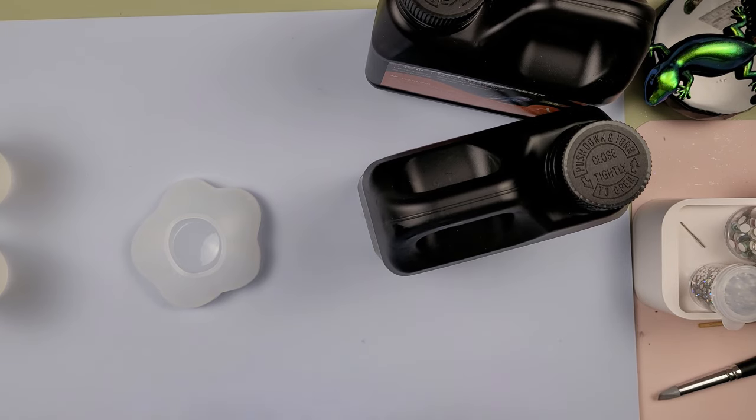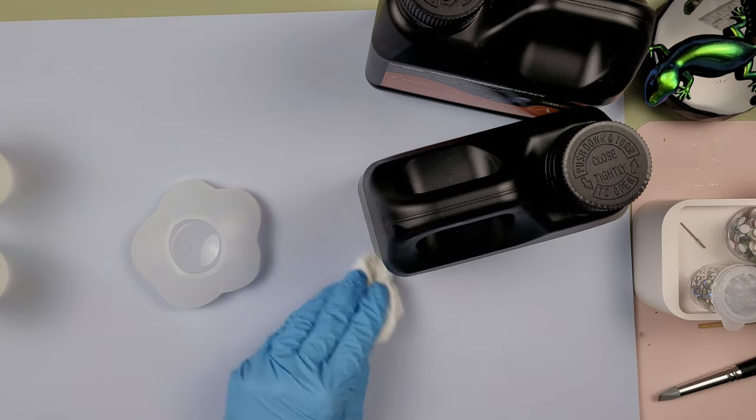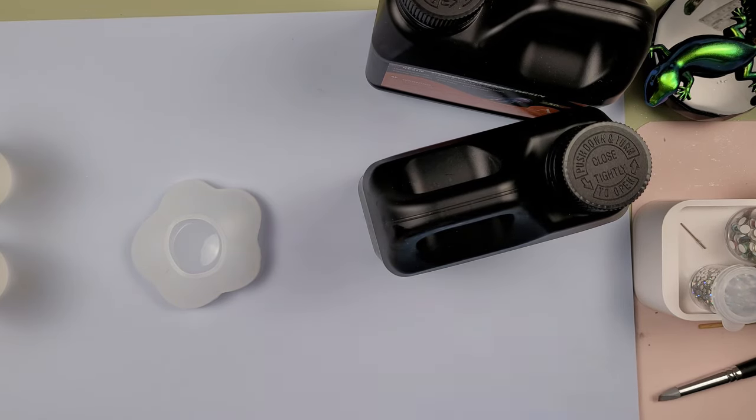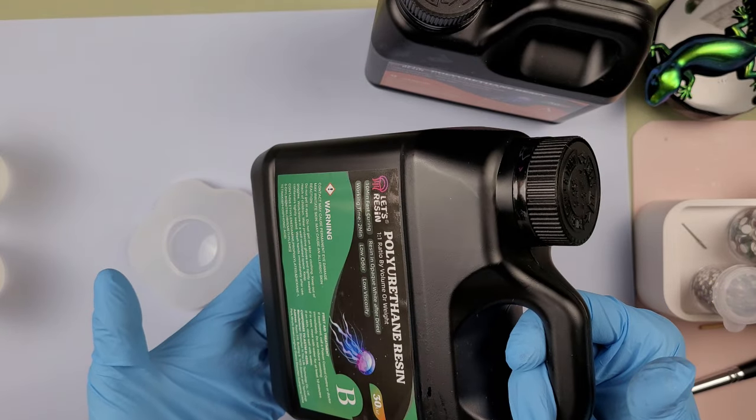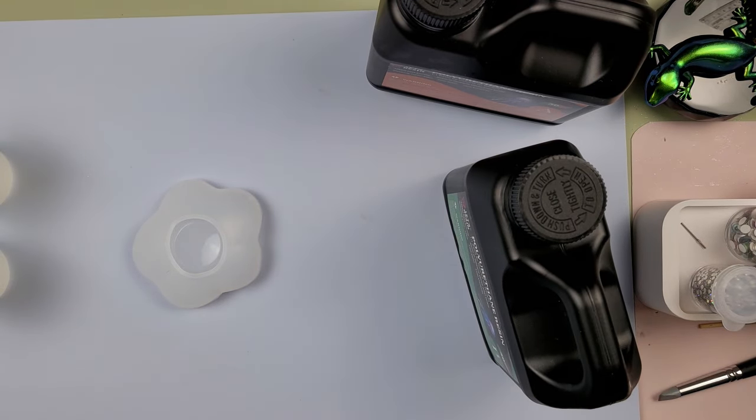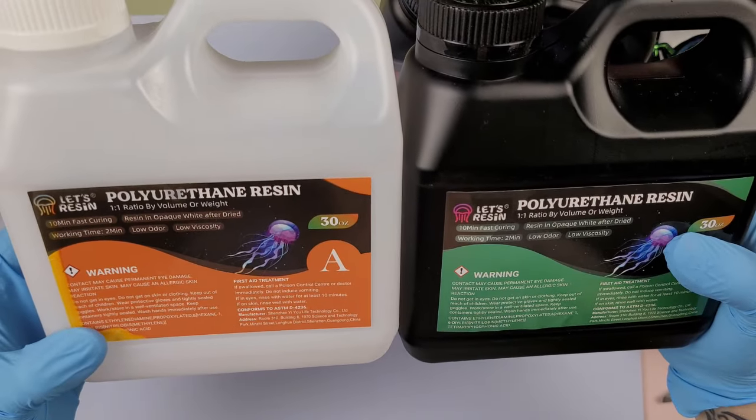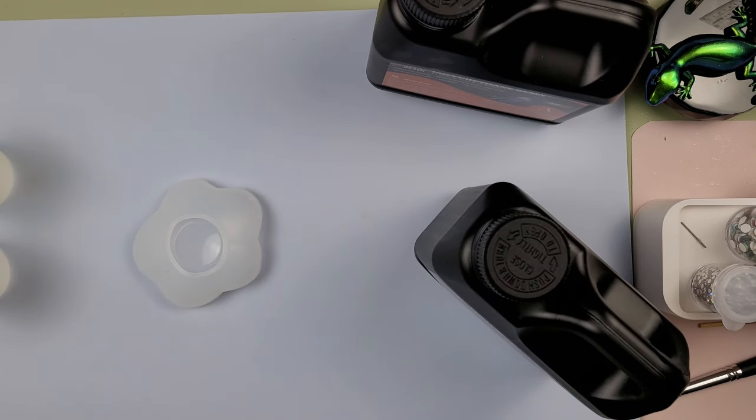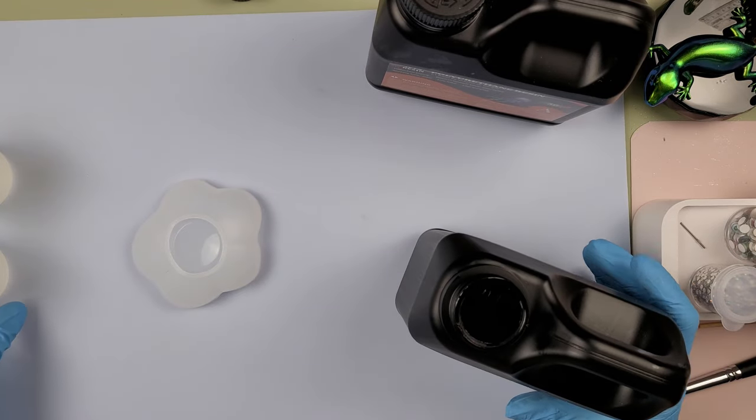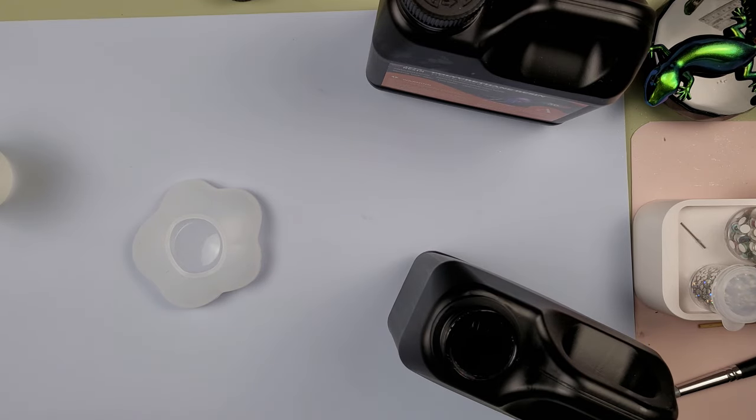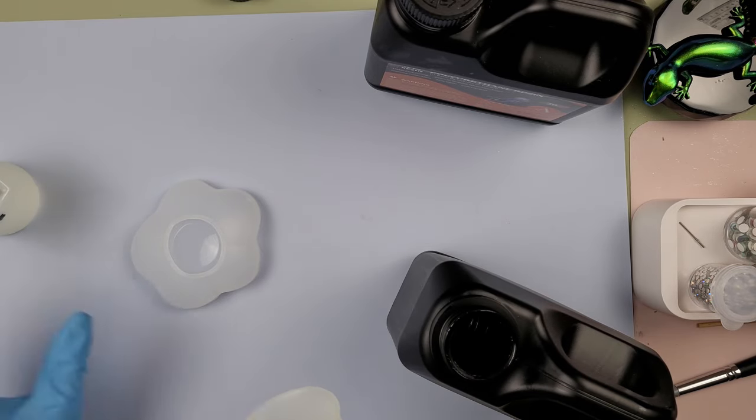I just decided that since I have some new people on my channel, I would mix this on camera. I also wanted to let everyone who's not new to my channel know that Let's Resin has changed the bottles. They are now black. They used to be clear. This is what they used to look like, so they have changed the bottles. They're now black. For those of you that are new, you mix this one to one by volume. I use a separate container for all my stuff so that I don't have any cross-contamination. I have special cups for my PU set aside.